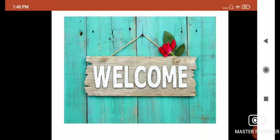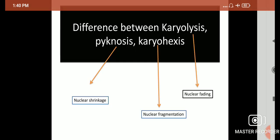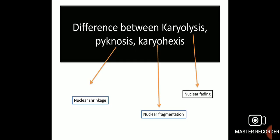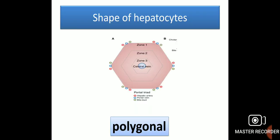In this video we will see terminologies used in research. The difference between karyolysis, pycnosis, and karyohexis: karyolysis is nuclear fading, pycnosis is nuclear shrinkage, and karyohexis is nuclear fragmentation. What are the shapes of hepatocytes? Hepatocytes have a polygonal shape.